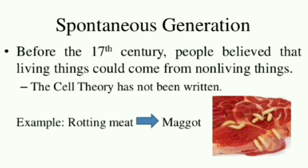During the 17th century there was a great conflict regarding the spontaneous generation theory. Until the 17th century, people believed that living organisms arise from non-living organisms. For example, if we take a rotting meat, the maggots are raised from this meat. So this was the concept of spontaneous generation — that living organisms arise from non-living organisms.